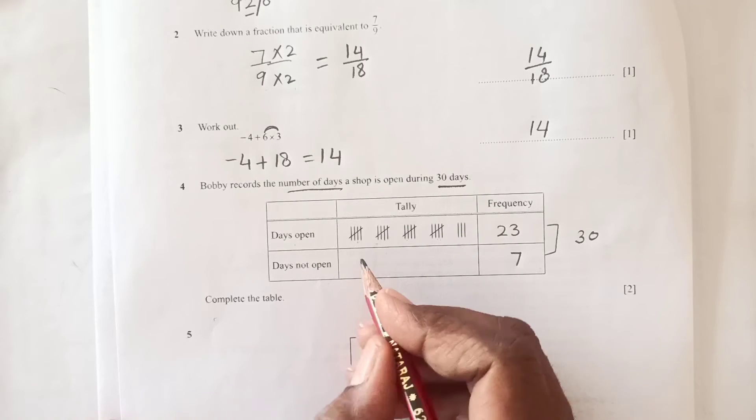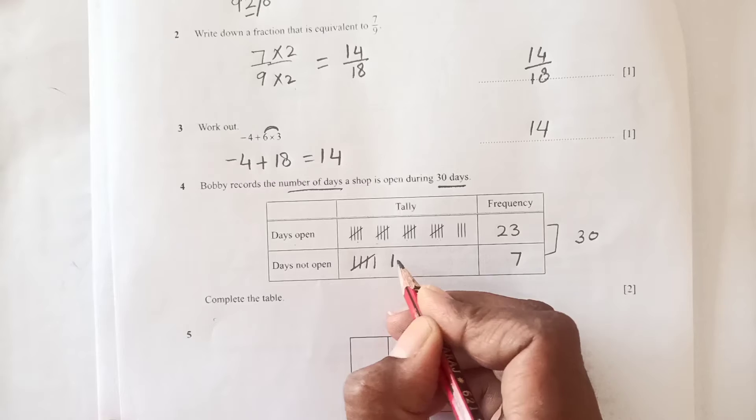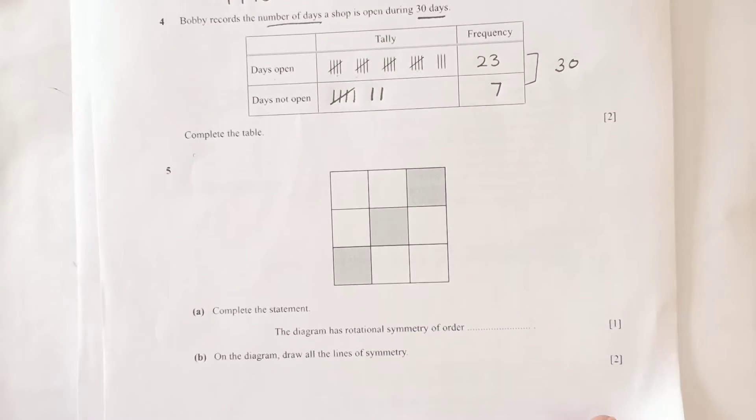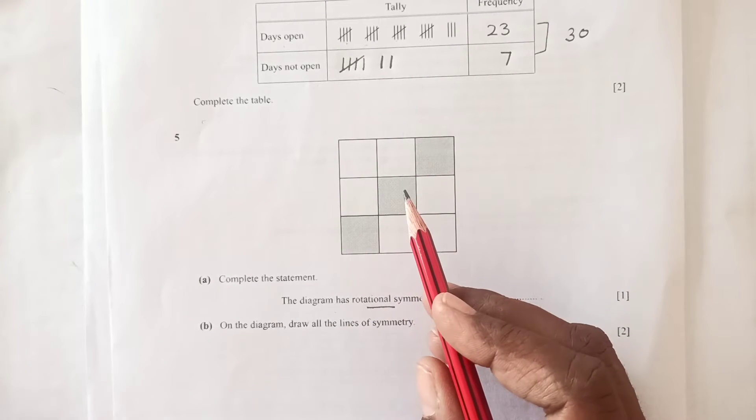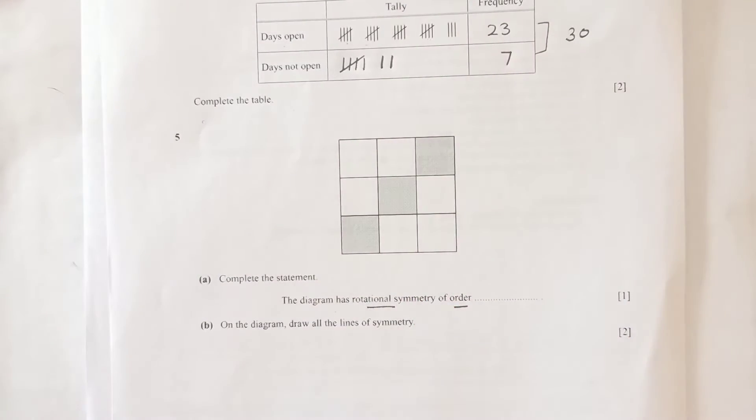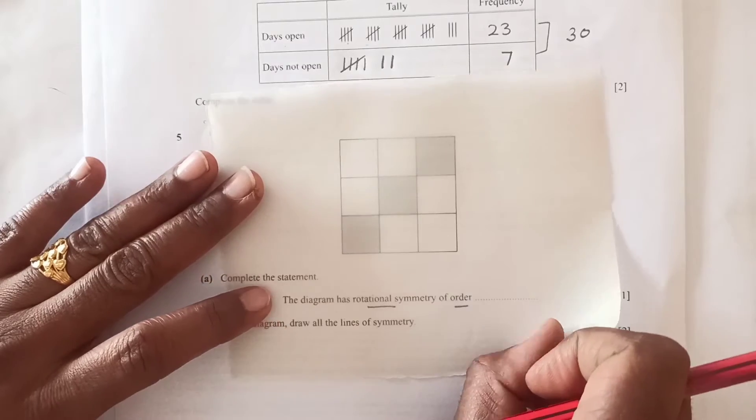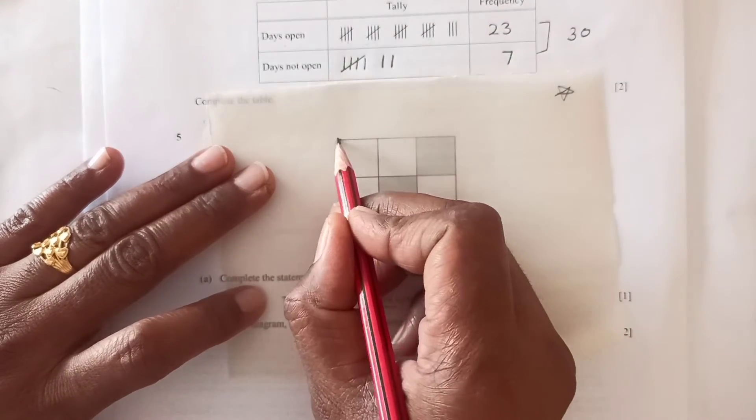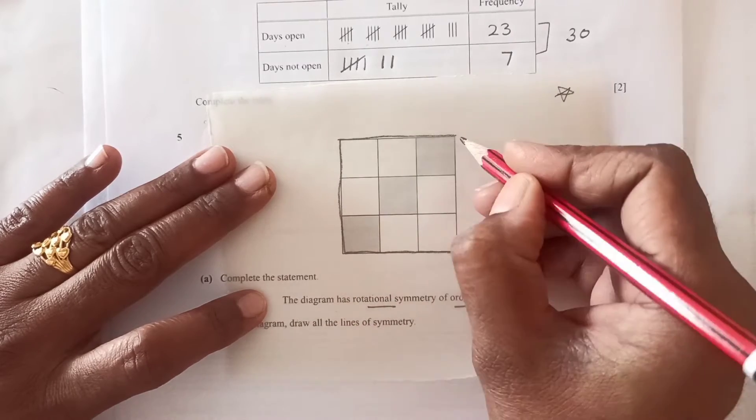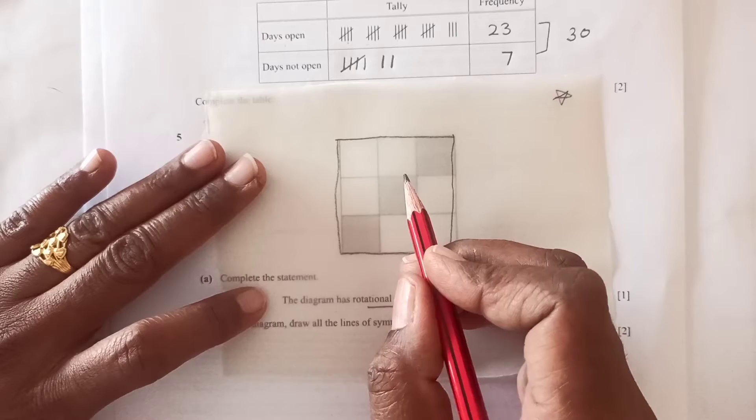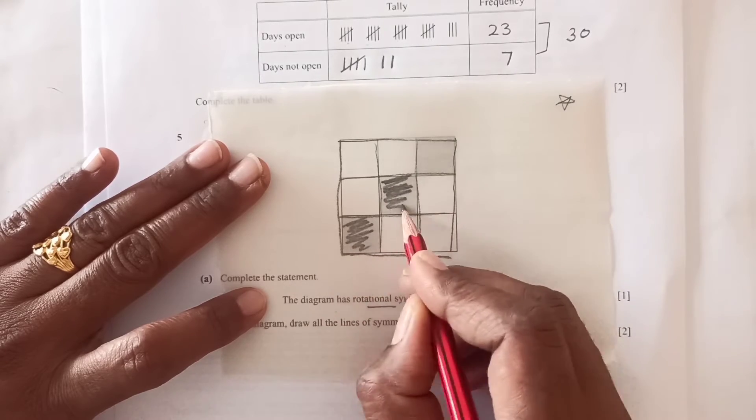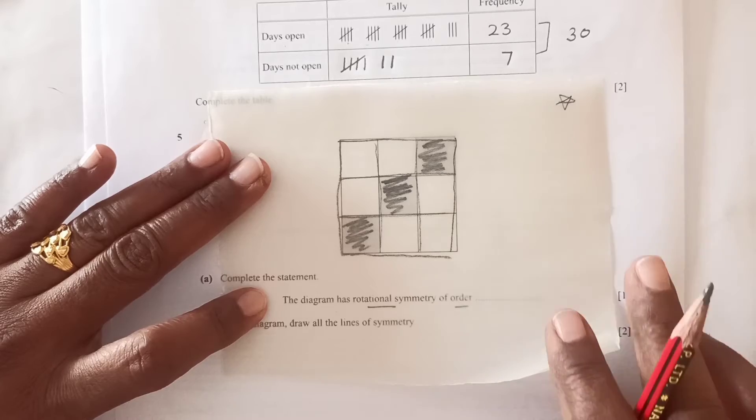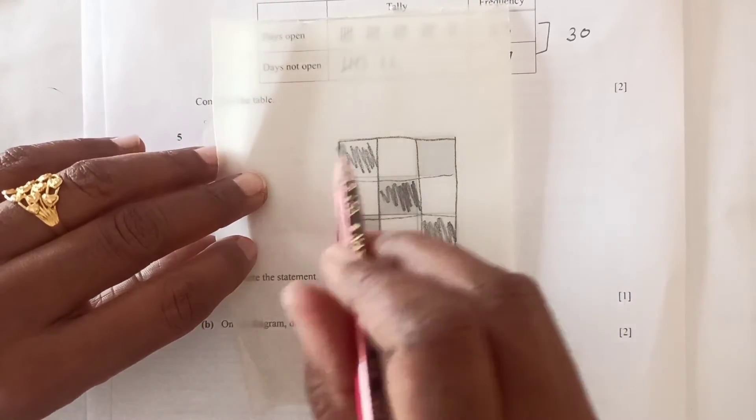Number 5: the question is complete the statement. The diagram has rotational symmetry of order... If you rotate this, we get two times the same shape. The easiest way is to trace the shape as it is, then rotate up to 360 and see how many times you get the same shape.